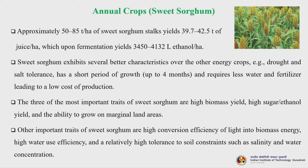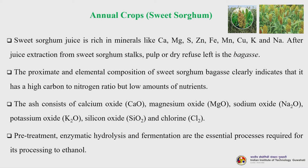Approximately 50 to 85 tons per hectare of sweet sorghum stock yields 39.7 to 42.5 tons of juice per hectare, which upon fermentation yields 3,450 to 4,132 liters of ethanol per hectare — a very good yield. Sweet sorghum exhibits better characteristics over other energy crops: drought and salt tolerance, a short growth period of about four months, and requires less water and fertilizer, leading to low production costs. The three most important traits are high biomass yield, high sugar-to-ethanol yield, and the ability to grow on marginal land. After juice extraction, the remaining bagasse also has enormous bioenergy potential.